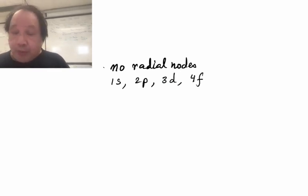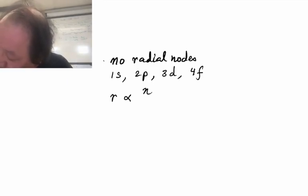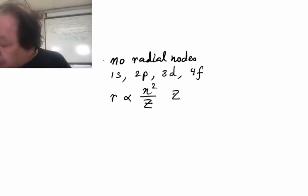And the Bohr model tells us about AOs that r, which is a measure of the size of the atom, is proportional to n squared over z. And in our case, we'll be looking at the same atom, so z is going to be a constant.